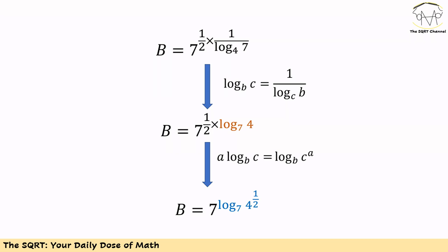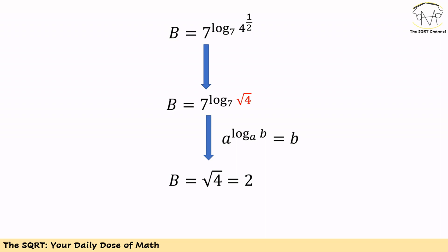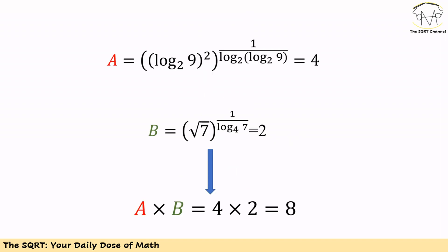We use A times log of C in base B equals log of C to the power of A in base B, and simplify 4 to the power of 1 over 2 as 2. Now, using A to the power of log B in base A equals B, the whole expression for the second term evaluates to 2. With A equal to 4 and B equal to 2, A times B equals 8, and that's our answer.